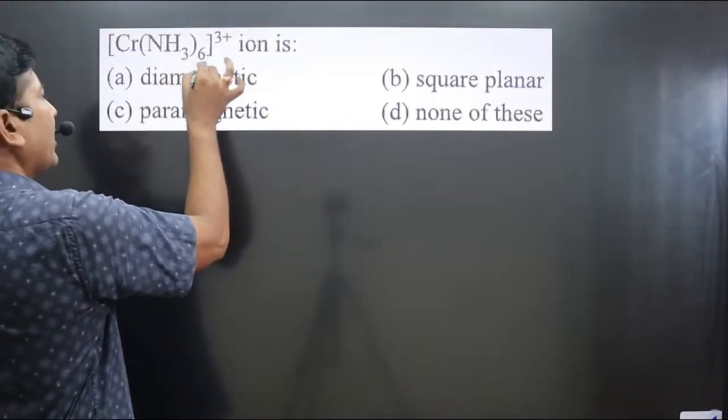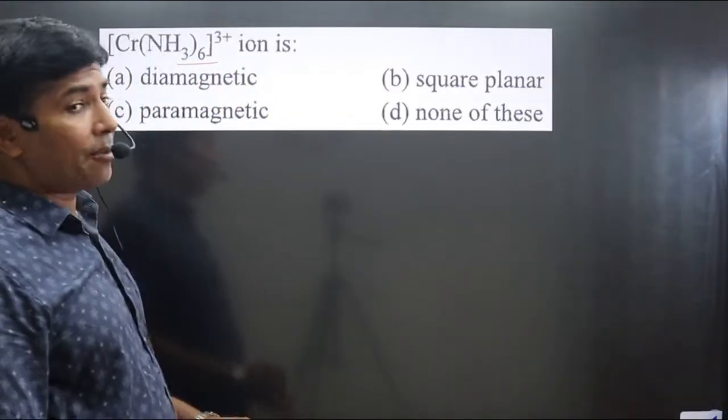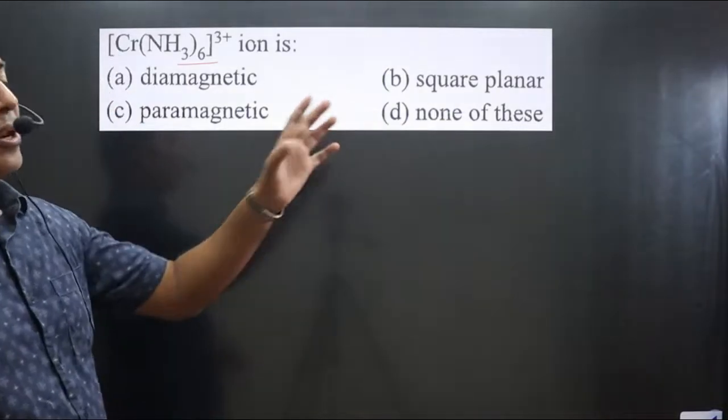The question asks whether the given cationic complex ion is diamagnetic, paramagnetic, square planar, or none of these.